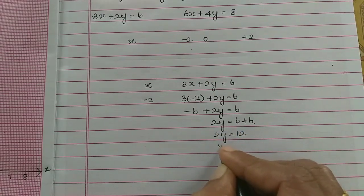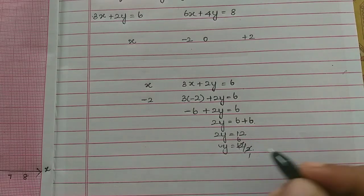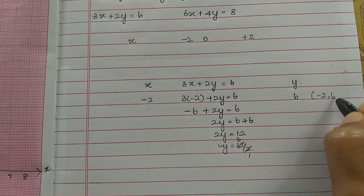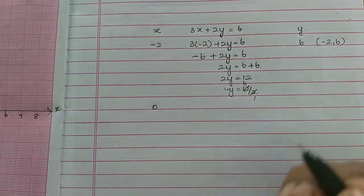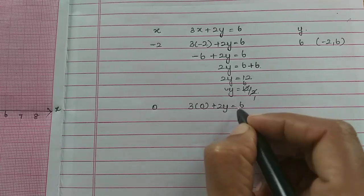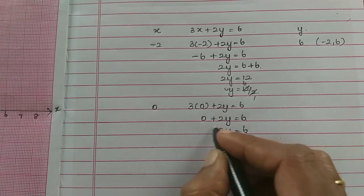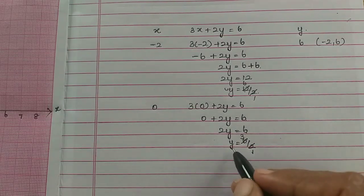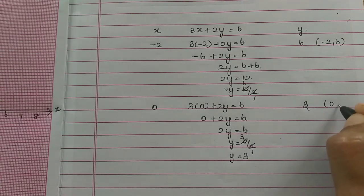2y is equal to 12. y is equal to 12 divided by 2, so y value is 6. So when x is minus 2, y is 6, giving point minus 2, 6. Next, x value is 0. So 3 times 0 plus 2y is equal to 6. 0 plus 2y equals 6, so y equals 6 divided by 2, giving y value 3. So point 0, 3.